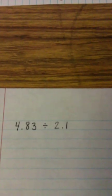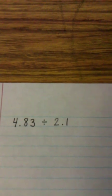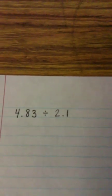Alright, so now for dividing decimals. I have 4 and 83 hundredths divided by 2 and 1 tenth. What I'm going to be doing here is I'm going to be using the area model and I'm going to be working backwards.